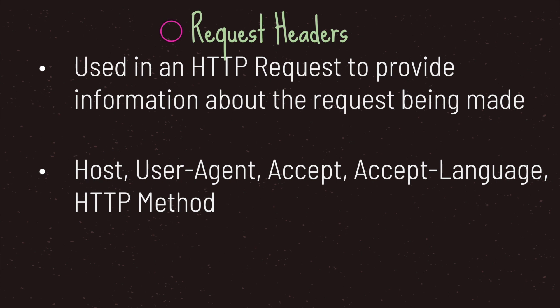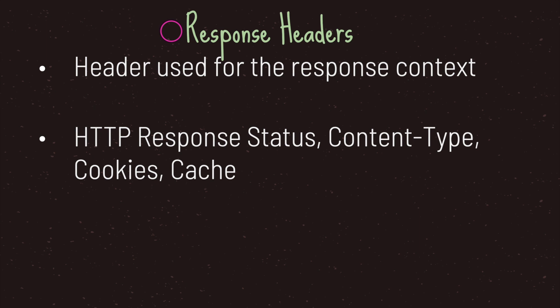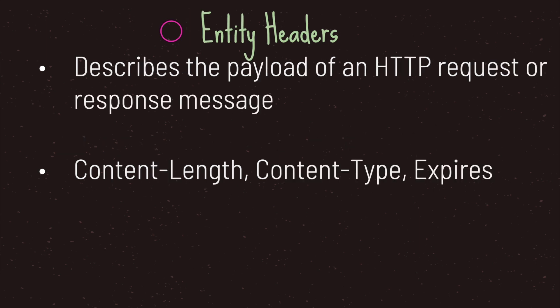The response header is used for the response context — basically the server context. Response headers can include the status code, which we went over previously. They can also provide information such as content type — for example, is the information an HTML file or a JSON file? The response header also includes cookies and cache. And entity headers describe the payload of an HTTP request or response message, which includes content length, content type, and expiration time.